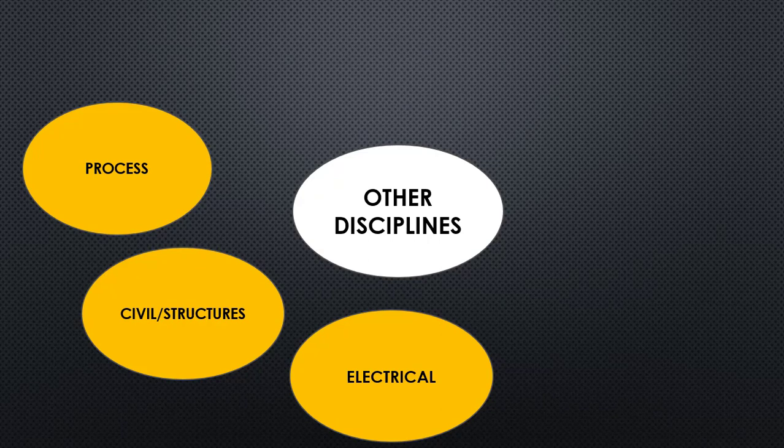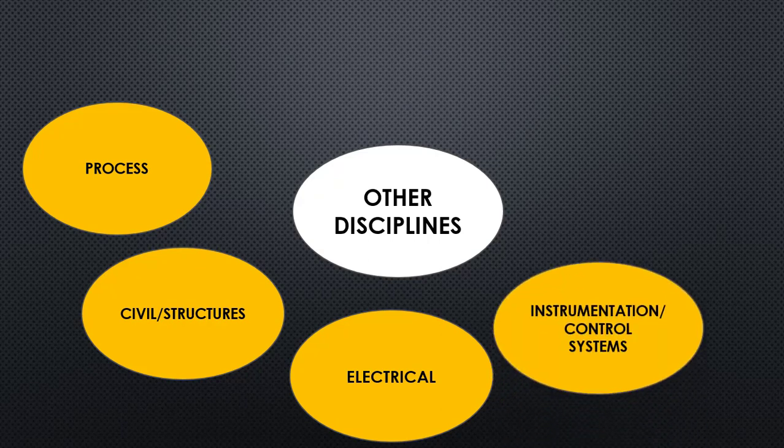The next discipline is instrumentation and control systems, from where piping requires lots of inputs regarding instrumentation and control valves — such as size of instrumentation, data sheets, end connections, and final vendor drawings of control valves. A piping design engineer must work along with the instrumentation engineer and do continuous follow-up to collect the final information of all instruments and controllers.